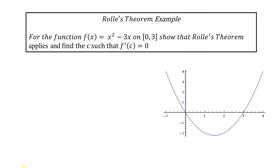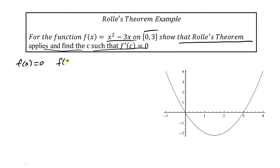Here's a Rolle's Theorem example. We want to work with the function f(x) equals x squared minus 3x on the interval zero to three. We want to show that Rolle's Theorem applies and find c such that f prime of c equals zero. Notice that f(0) is equal to zero, and f(3) is equal to three squared minus three times three, which equals zero. So f(3) equals f(0).